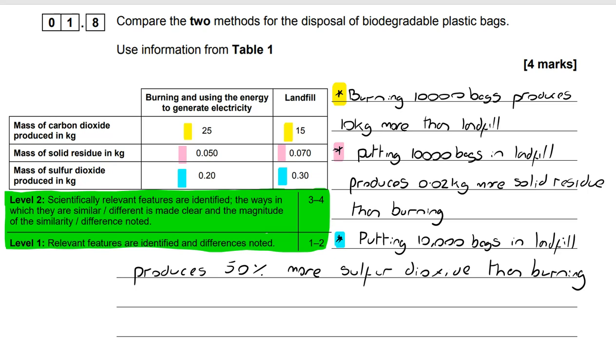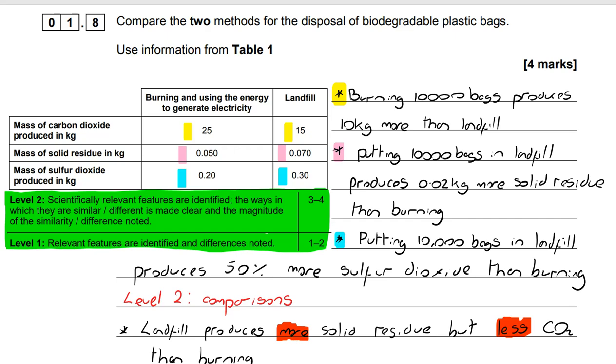Now to get the level 2 we need the comparisons. So we're looking for things like landfill produces more solid residue but less carbon dioxide than burning. And that will take you up to the next level.